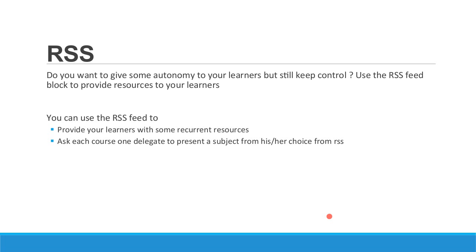Every week there is one delegate in charge of searching the RSS feed. We use the blog RSS feed, and trainers have a list of RSS feeds available in their field. They can choose whatever RSS feed they want and change from one week to another to bring variety. How does this increase attendance? Because you put responsibility on the learner, and also the other colleagues know that one colleague will be presenting in the classroom. So when they're thinking 'should I go to class today or not?', they have the reminder that their colleague is presenting a topic that might interest them. It's a way to put a carrot instead of a stick.